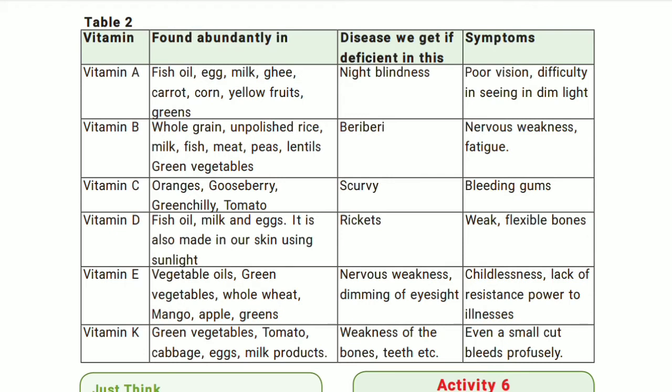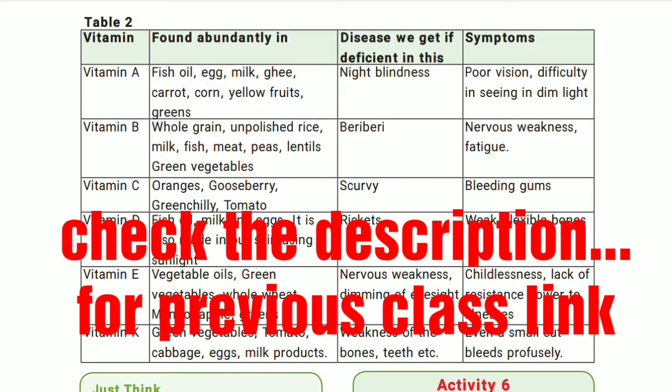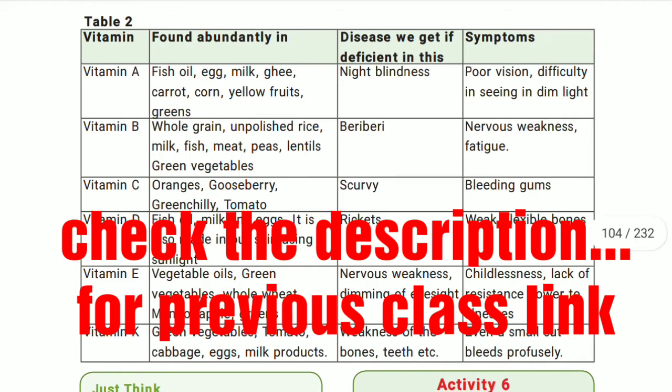If you are deficient in vitamin A, the deficiency disease you get is night blindness — called malikkan noy.